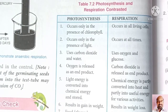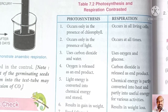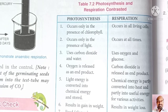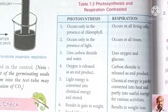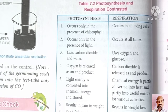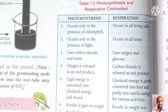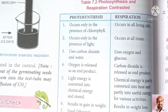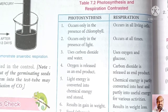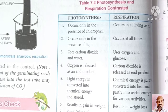Photosynthesis occurs in the presence of chlorophyll, whereas respiration occurs in all living cells whether chlorophyll is present or not. Photosynthesis occurs only in the presence of light during daytime, whereas respiration occurs at any time. In photosynthesis, carbon dioxide and water are used, whereas in respiration, oxygen and glucose are used. During photosynthesis, oxygen is liberated, and during respiration, carbon dioxide is released as a by-product.